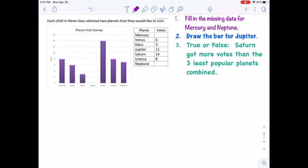The votes for Mercury and Neptune are not recorded in our table, but they each have a bar in our bar graph, so we're able to pull that information from the bar graph. How many votes did Mercury get? Mercury got eight votes.